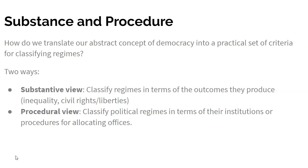And then you have a procedural view. The procedural view classifies political regimes in terms of their institutions or procedures for allocating offices. On this view, you're not looking at whether or not people are free or not, but you're just looking at how decisions about their freedom are being determined. And generally it has something to do with elections and alternation of power. That will tell you whether a country is democratic or not. But on that view, democracy is not necessarily liberal — it's not necessarily egalitarian. It's its own thing.